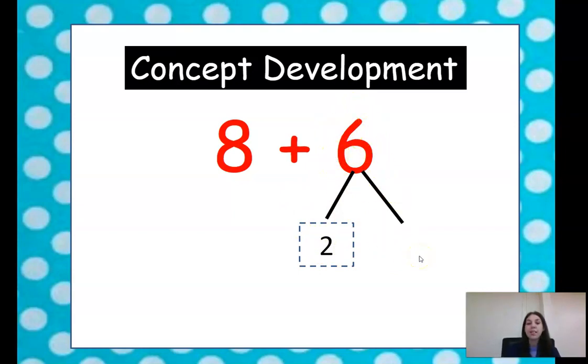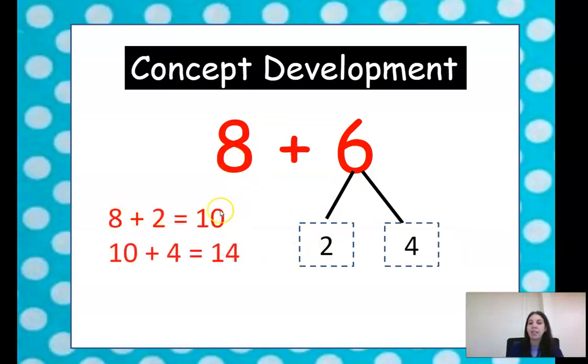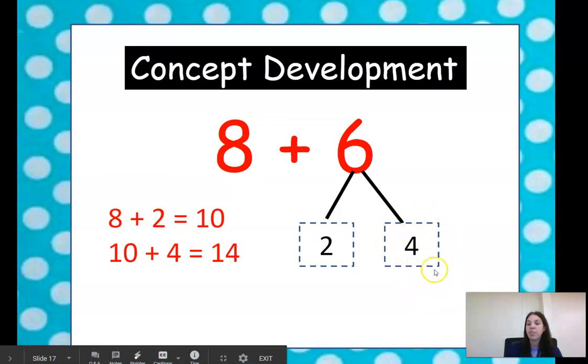2 plus 4 equals 6. So now we have 8 plus 2 equals 10. Right here. 8 plus 2 equals 10. And then 10, and we have this 4 more. 10 and 4 more equals 14. Nice work.